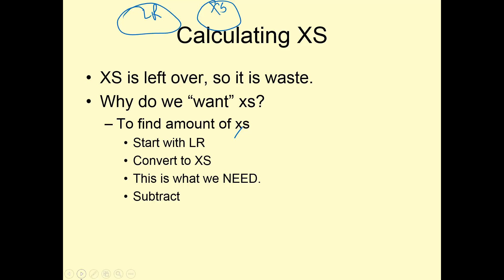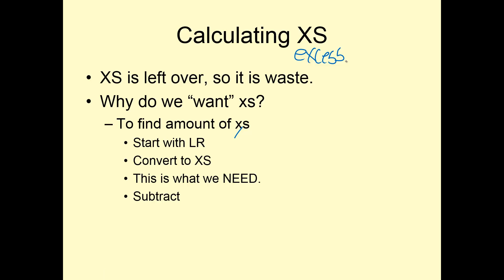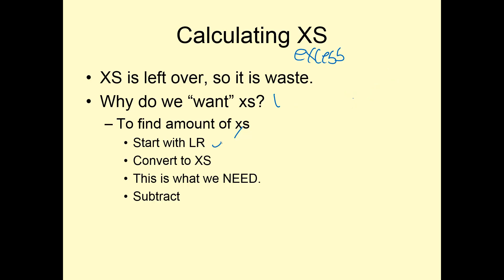Sometimes we want to know exactly how much is left over. This is called the excess — excess is left over, so it is waste. Why do we want excess? We want to make sure we use all of our limiting reactant. We use our most expensive reactant as limiting, and our excess reactant will be cheap. To find the excess reactant, we first find the limiting reactant, and then we convert the limiting reactant into the excess reactant to find what we need, and then subtract.